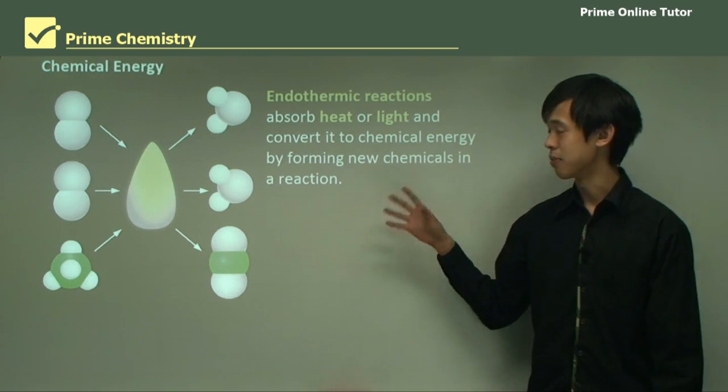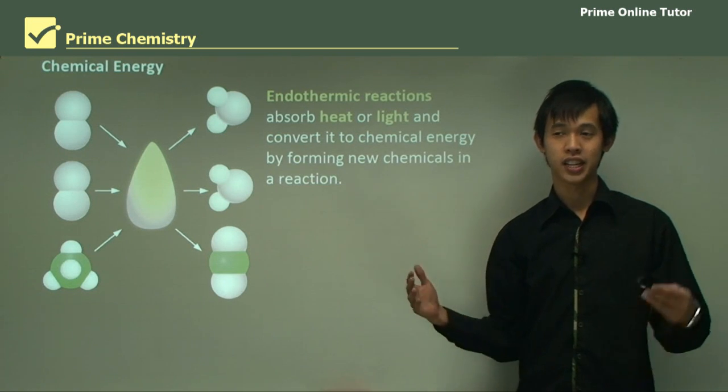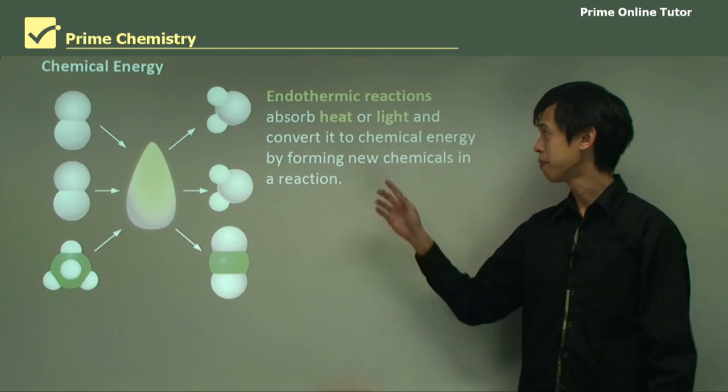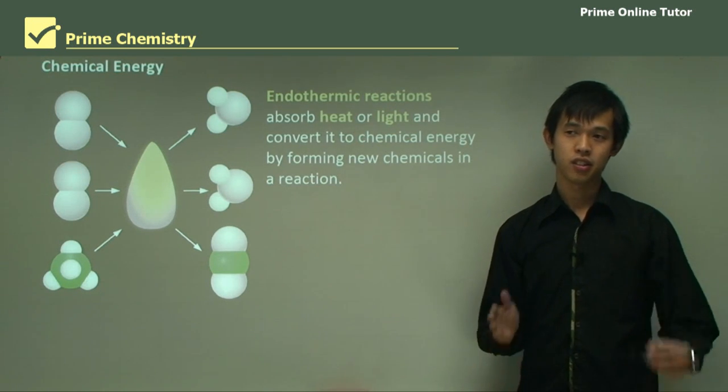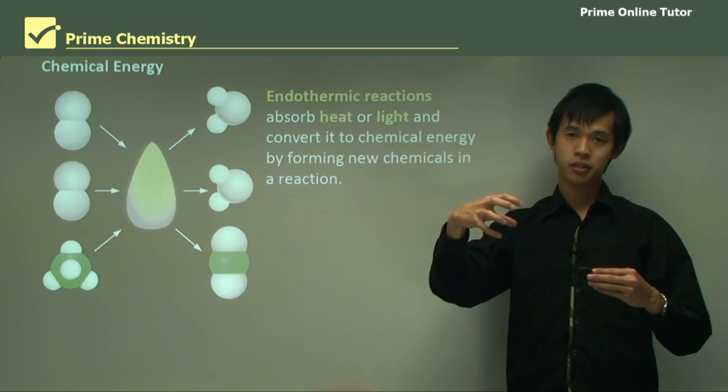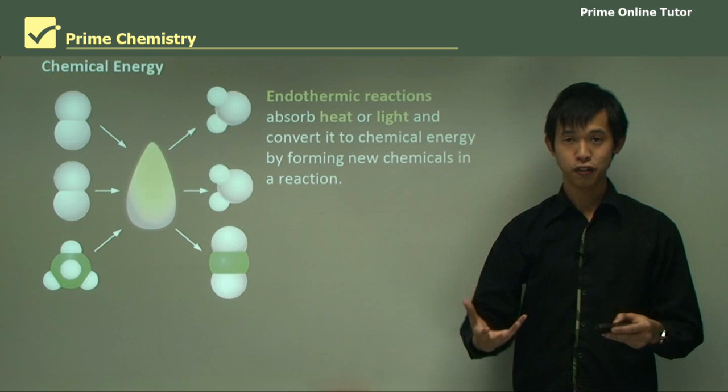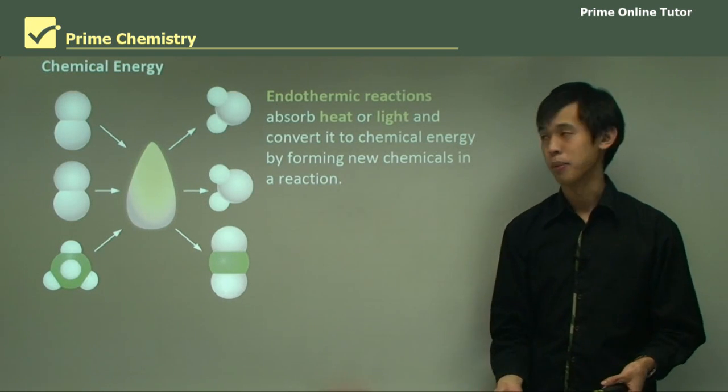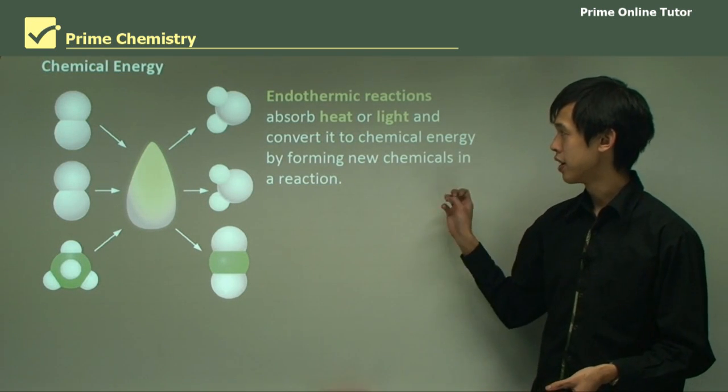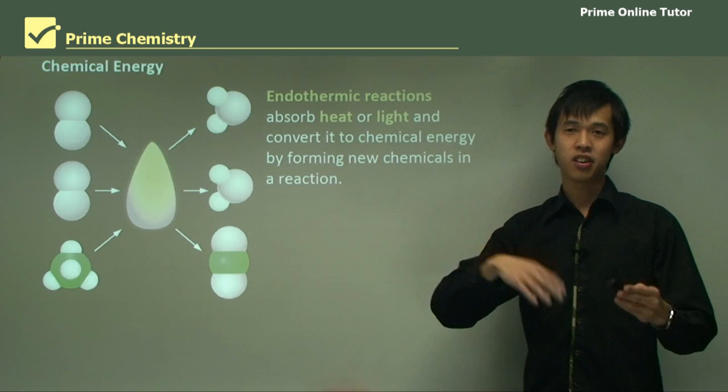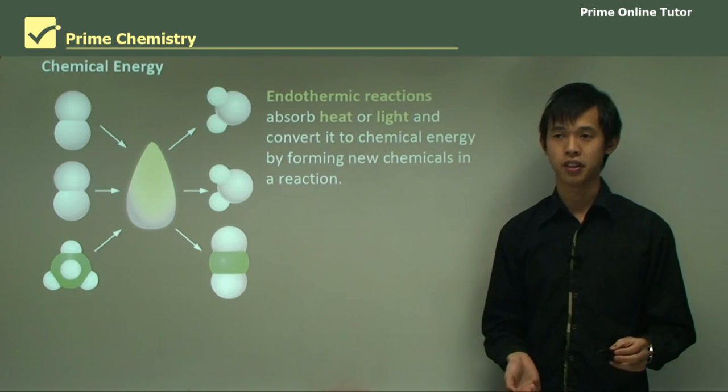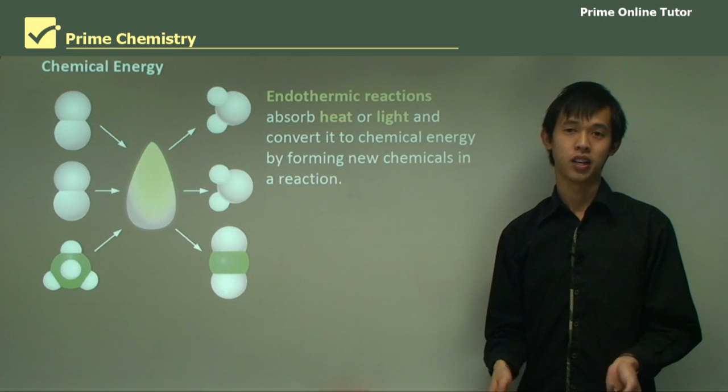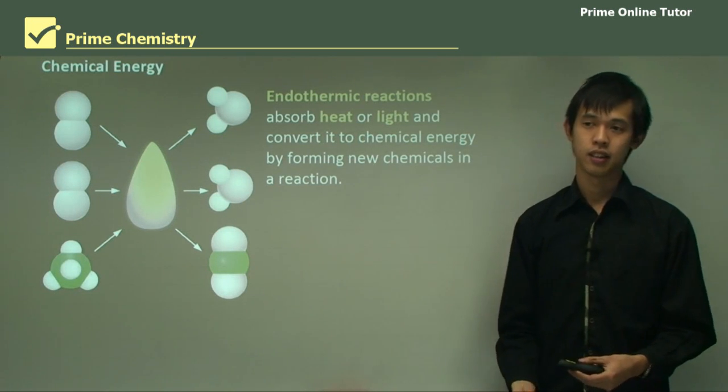Endothermic reactions absorb light and heat, like I said, that solar concentrator, and convert it to chemical energy by forming new chemicals in the reaction. So that heat changes the chemicals. They now are different, which we can then use for other purposes later. So you can think of endothermic and exothermic reactions as sort of the opposites of one another. One gives you heat and light. The other one absorbs heat and light.